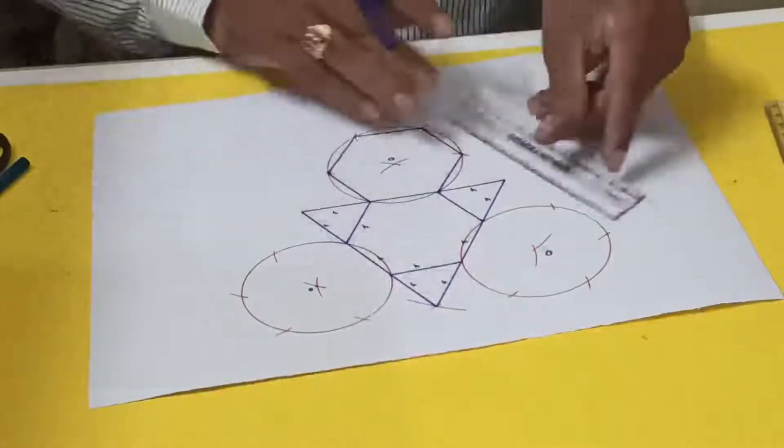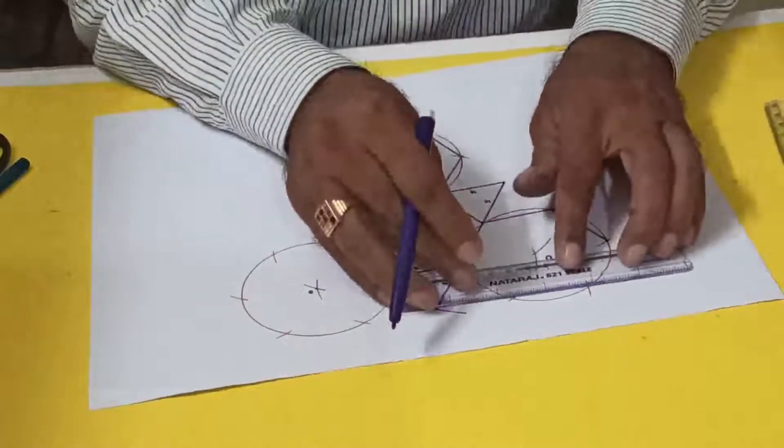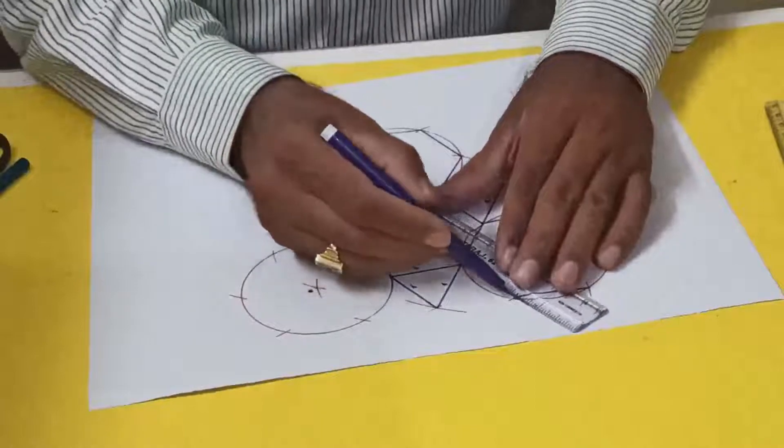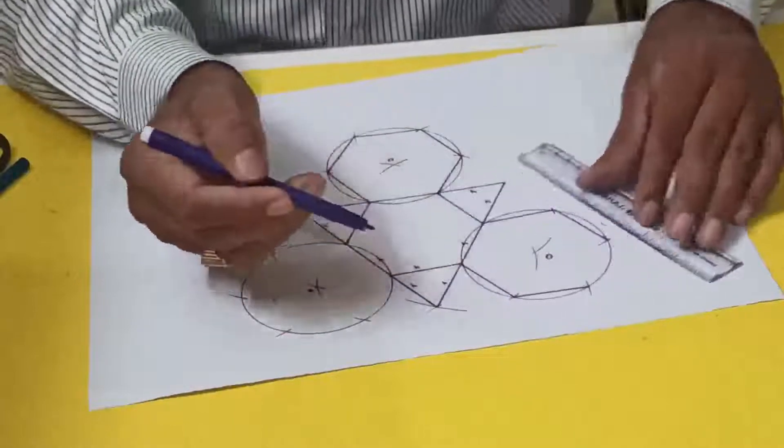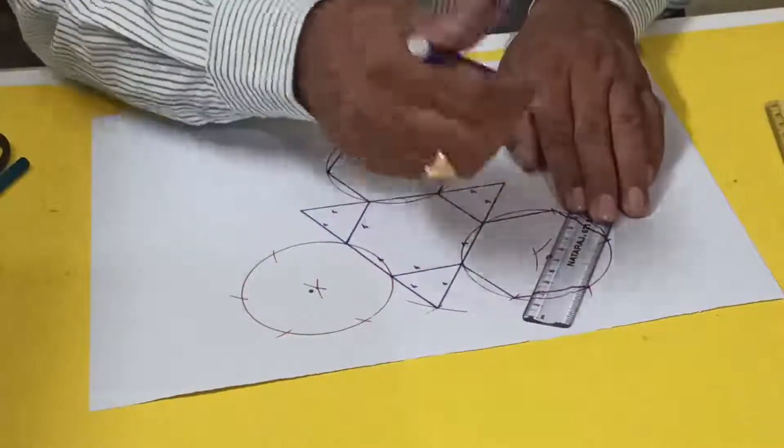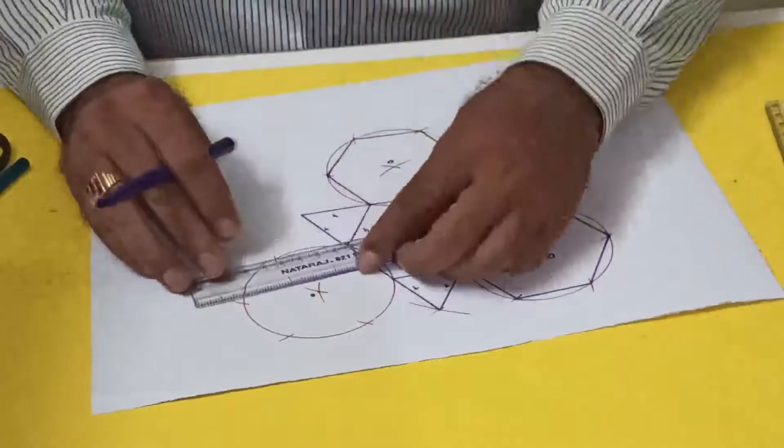And this one also again. So this one. The rest portion you can see how you can get a border, so you need not to draw extra border. This extra portion you can use as border.